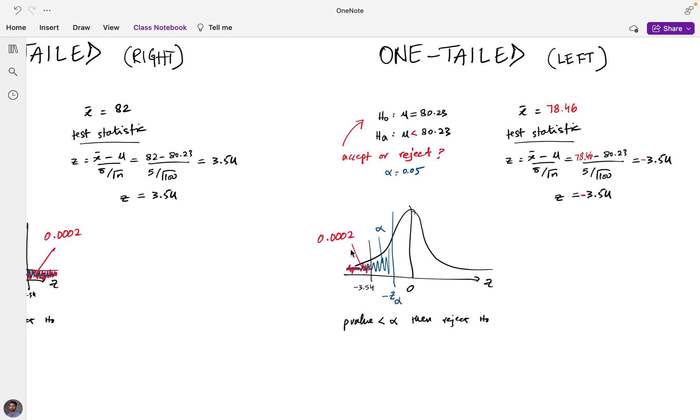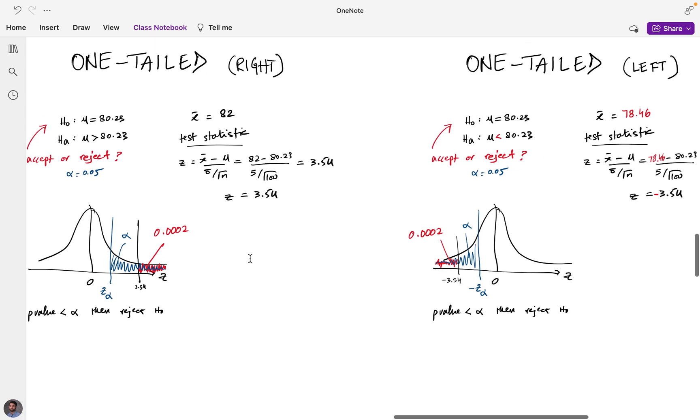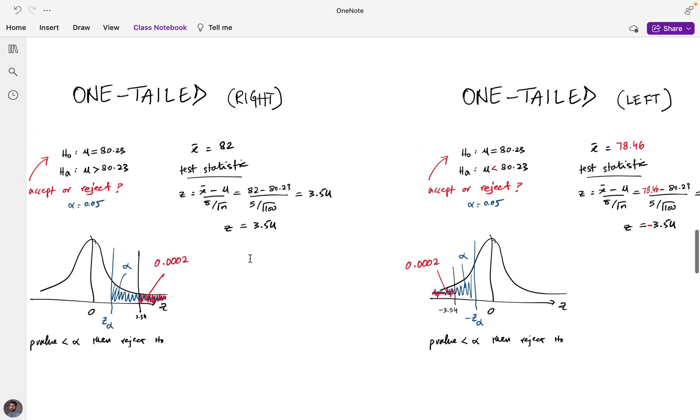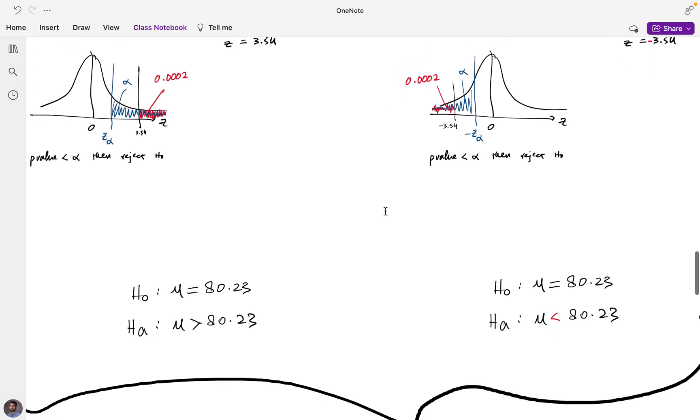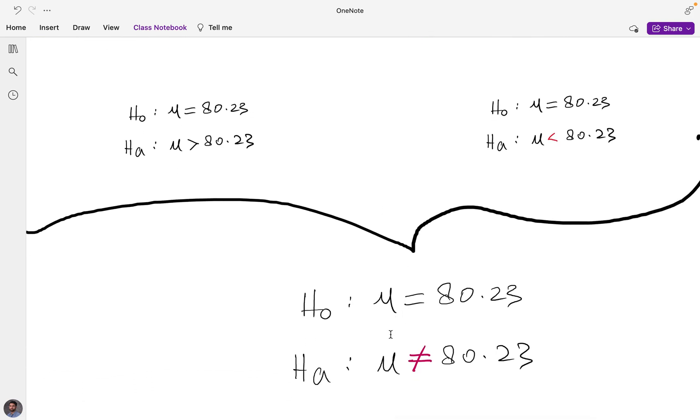But what's important here is to understand that it would be nice if we could define one alternative hypothesis that could take care of both of these cases—greater than 80.23 and less than 80.23. Turns out we could do that. We could define an alternative hypothesis by setting up like this where we could say mean value is not equals to 80.23.